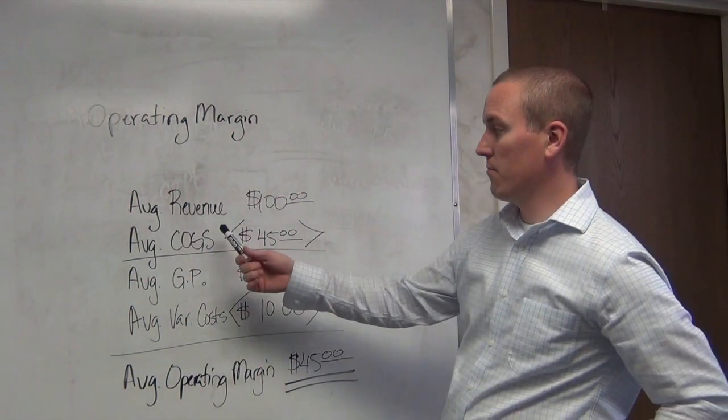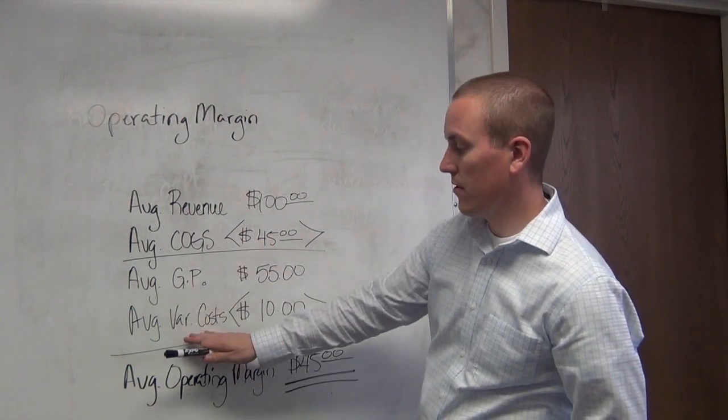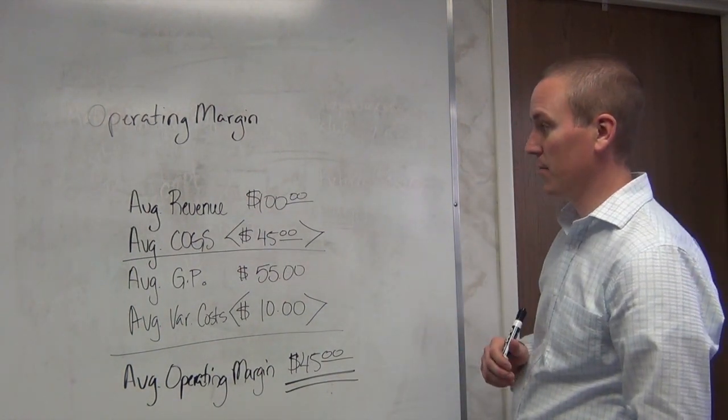In order to do that, you're going to need to know your revenue, your cost of goods sold, and your variable cost per item sold. Then you can calculate your operating margin. So let's begin with this example.